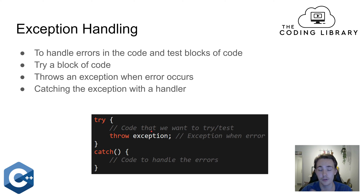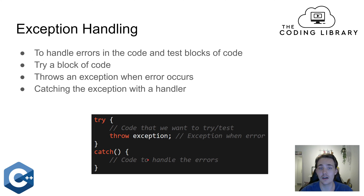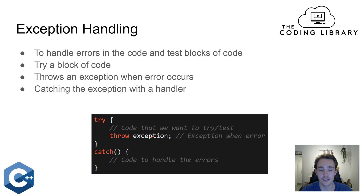That exception can either be a number, some exceptions from the standard library, or a string. When we throw an exception because some error occurs in our code, we can have a catch block down here which catches the exception with a handler. Down here we have code that handles the errors — it can print out the error message and what type of error it was. It's really useful when we're trying out new blocks of code and we don't know if there are any bugs or errors that can occur.